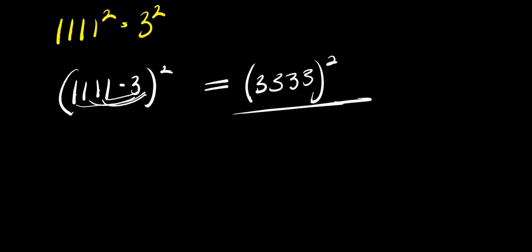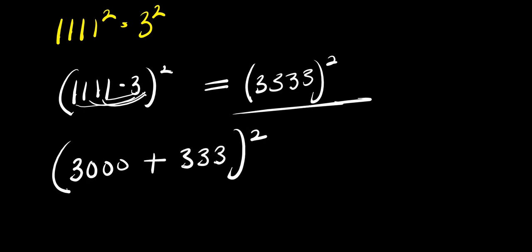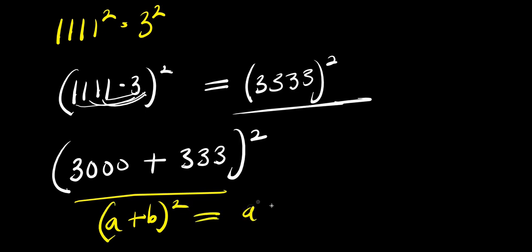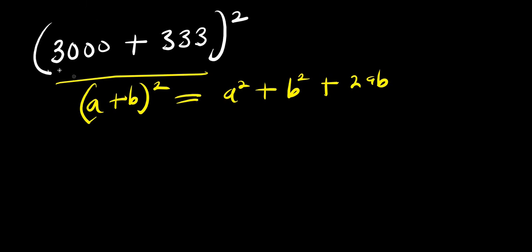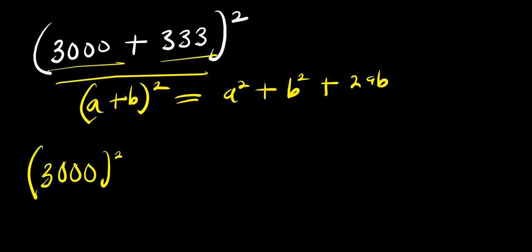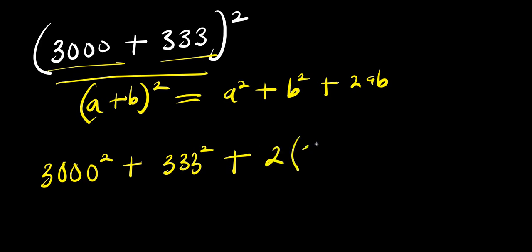We need to evaluate this to get our final answer. So I can express this as 3000 plus 333, raised to the power 2. And this is in the form of (a+b) squared, which equals a squared plus b squared plus 2ab. So applying that here, a is 3000 and b is 333. I'm going to have 3000 squared plus 333 squared plus 2 times 3000 times 333.